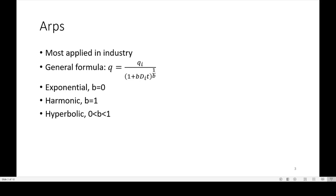The first one is ARPs, most applied in the industry. You've probably seen the general formula, which is why you're probably asking the question of which one should I use. And I wanted to give a reminder of what the B factors represent and what type of decline curve you're looking at when you're utilizing ARPs.